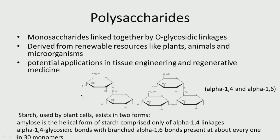Let us look at starch. Starch is used by plant cells and exists in two forms. First, let us understand alpha 1,4 and alpha 1,6 linkages. In an alpha 1,4 linkage, the OH is below — as you can see, these two monosaccharides are linked, with the connection between carbon 1 of one and carbon 4 of the adjacent monosaccharide. When we say alpha, the hydroxyl is below the plane.